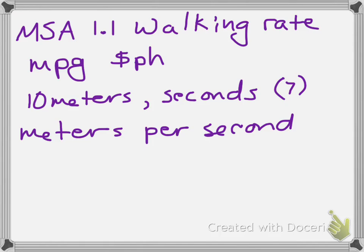Whichever number you put first, then the division symbol, then the second number — your label has to follow that same order. For example, with miles per gallon: miles came first, gallons came second, miles were divided by gallons, and the answer is miles per gallon.